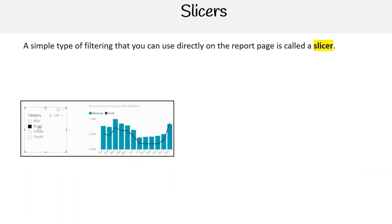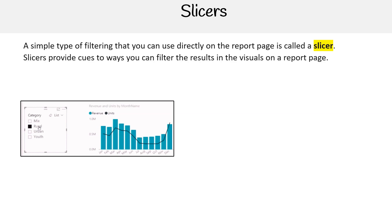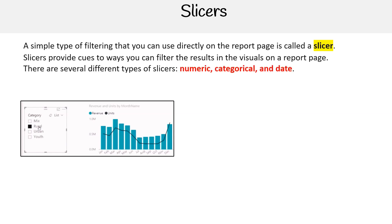A simple type of filtering that you can use directly on the report page is called a slicer. Slicers provide cues to ways you can filter the results in the visuals on a report page. There are several different types of slicers such as numeric, categorical, and date. Slicers make it easy to filter all the visuals on the page at once.